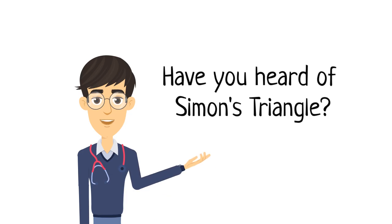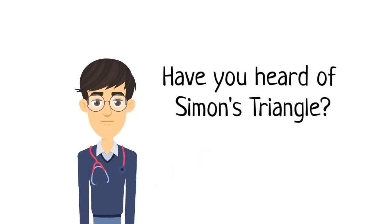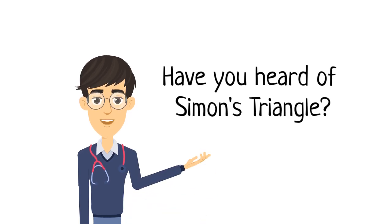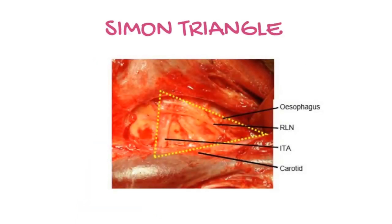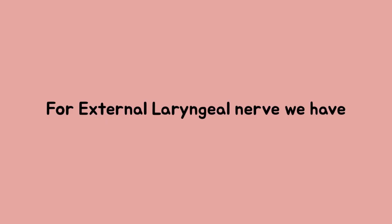Have you heard of Simon's triangle? It is bounded laterally by the common carotid artery, medially by the esophagus, and superiorly by the inferior thyroid artery. It is another site where you'll locate the recurrent laryngeal nerve.